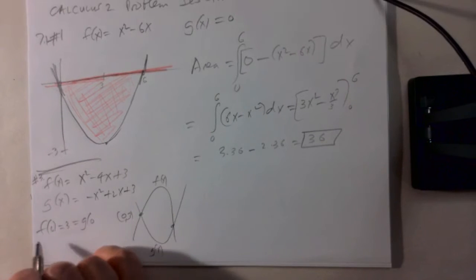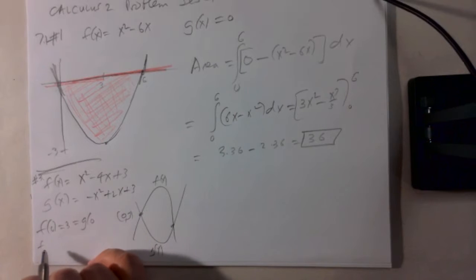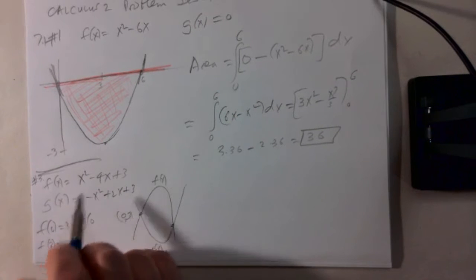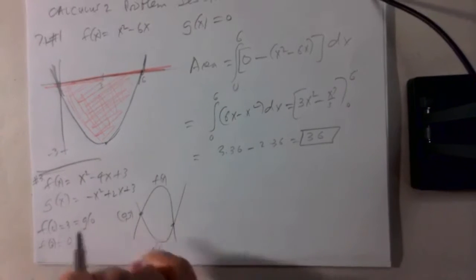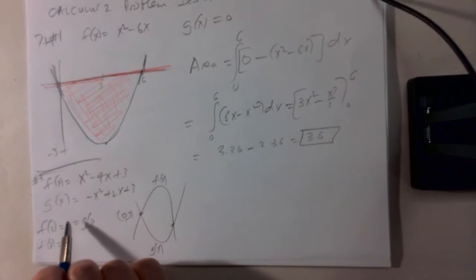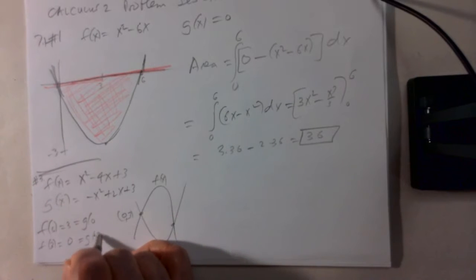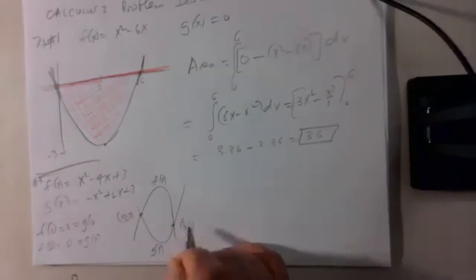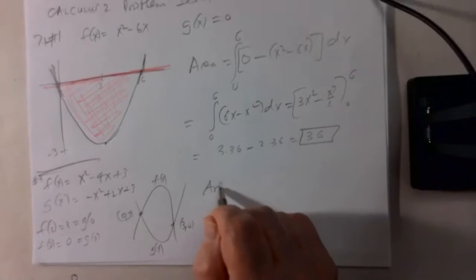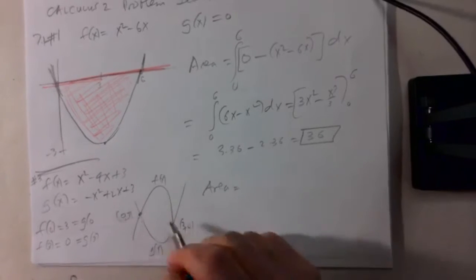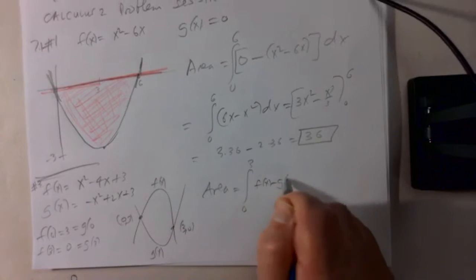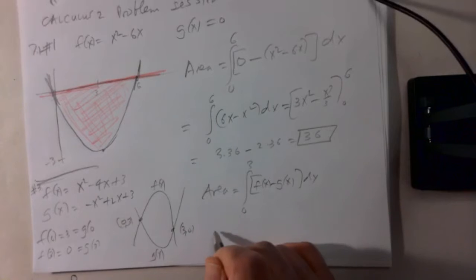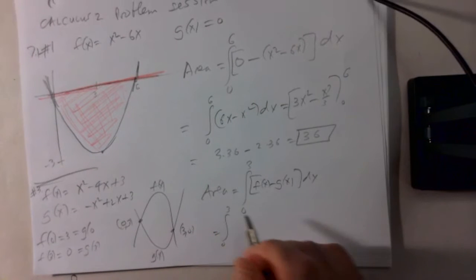This point is, let's see, f of 3 is 9 plus 12 minus 12 is 0. So g of 3 is minus 9 plus 9 is 0. So this point is 3 comma 0. So the area is going to be the integral from 0 to 3, the top minus the bottom.